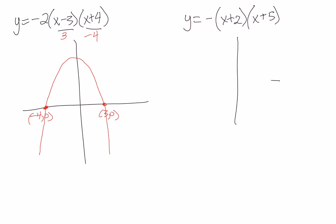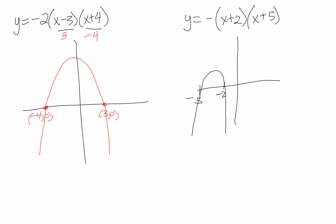One more example: y = -(x + 2)(x + 5). Our x-intercepts will be at (-2, 0) and (-5, 0), and we know the parabola is upside down. As long as we're only looking for x-intercepts, factored form is a great form to use. We'll stop there and you can do some practice questions on this.